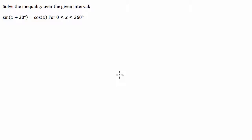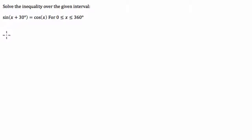Hi guys, today we've got a trigonometric identity problem where we're being asked to solve an equation over a given interval. We're going to make use of the angle sum identity to solve this problem. There are a few little tricks we're going to use along the way, but it's quite straightforward.